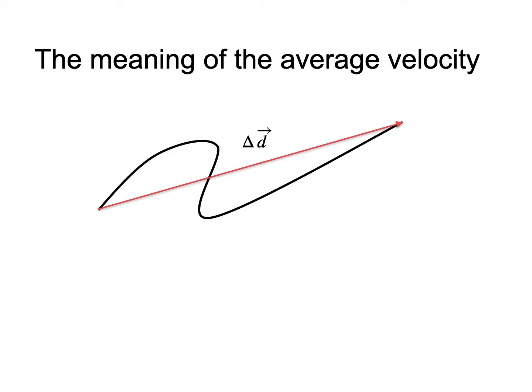If the equation for the definition of the average velocity is written slightly differently, we can see that the average velocity is the displacement per unit time, so that when it is multiplied by how long it took to reach the final position, it gives the displacement.